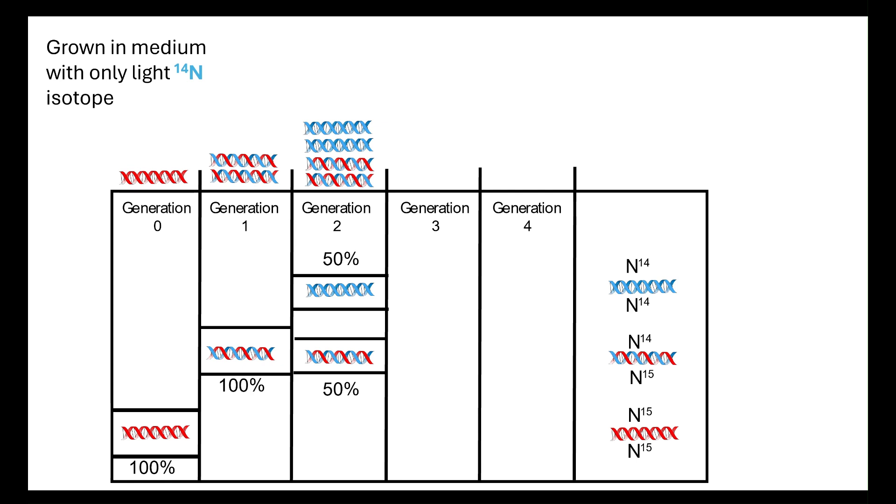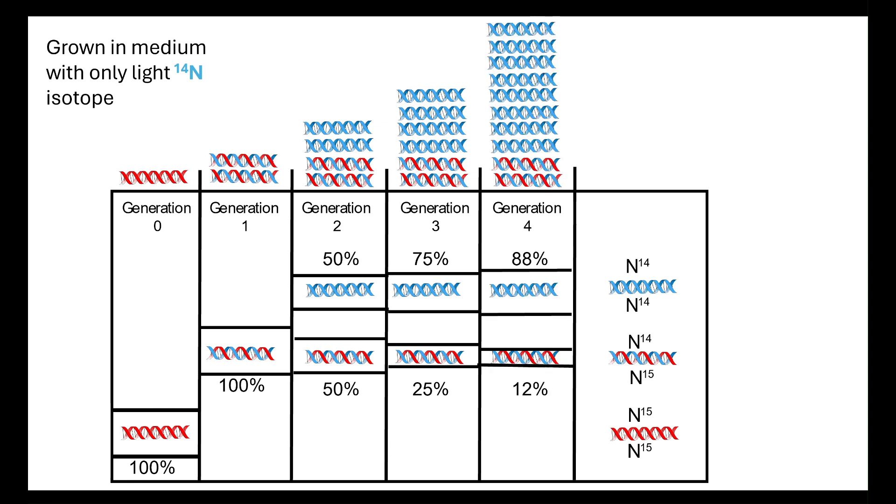With each generation we keep doing that. What you can see is the concentration which is N15, N14 gets less and less. Because remember, we only started out with two strands which were N15. As we continue on, we start to see that will get less and less.